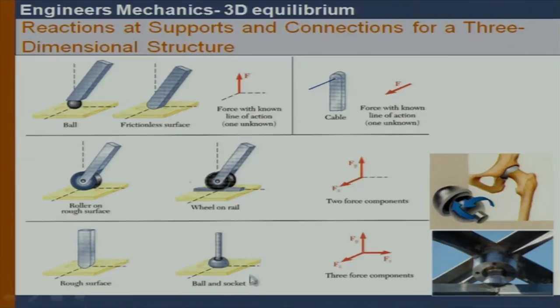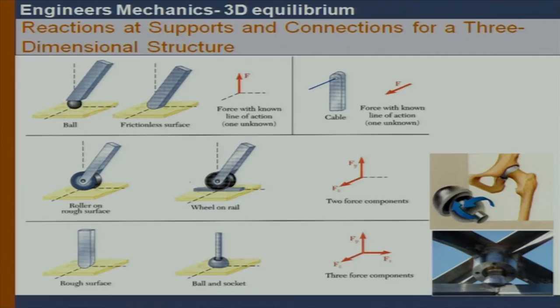Next is the ball and socket joint — a member with a ball head placed in a cup. The translational motion is prevented in all three directions, so we get support reactions in all three translational directions: three concentrated force reactions. However, rotational motion is allowed in every direction — the body can rotate about any axis — so there should not be any moment reaction.